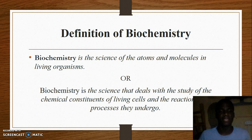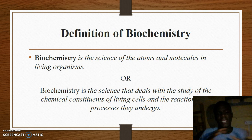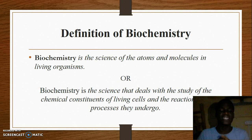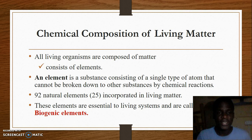Biochemistry is a hybrid science — it consists of biology and chemistry. We know that biology is the study of living organisms and chemistry is the study of chemical atoms and molecules. Joining these two terms together, biochemistry is the science of atoms and molecules in living organisms, or we can say it is the science that deals with the study of chemical constituents of living cells and the reactions and processes they undergo.